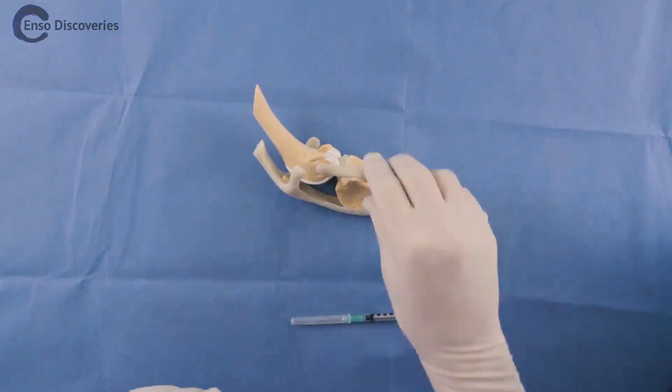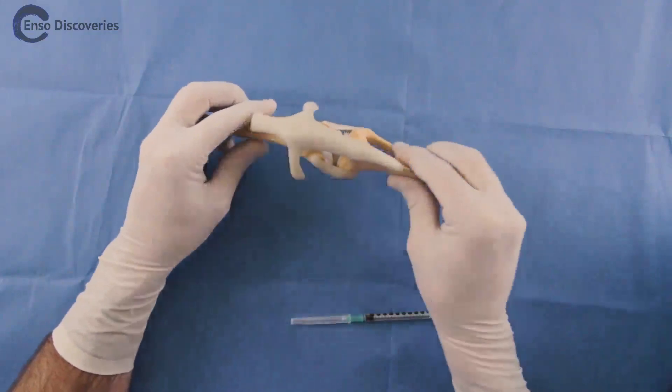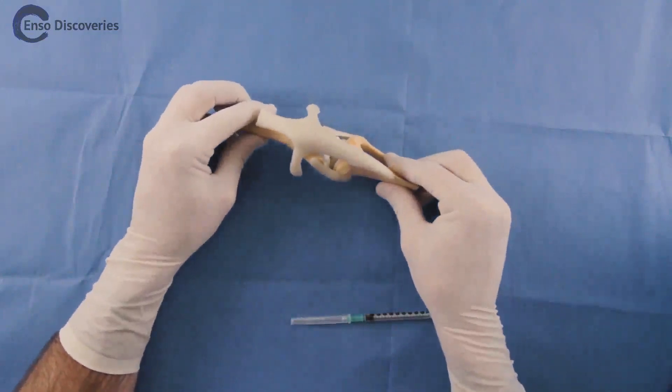Animals can be in lateral recumbency for stifle injections, but dorsal recumbency is preferred as both legs are presented with the proper amount of flexion.